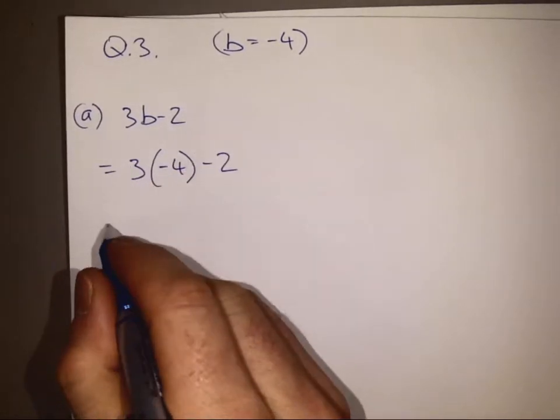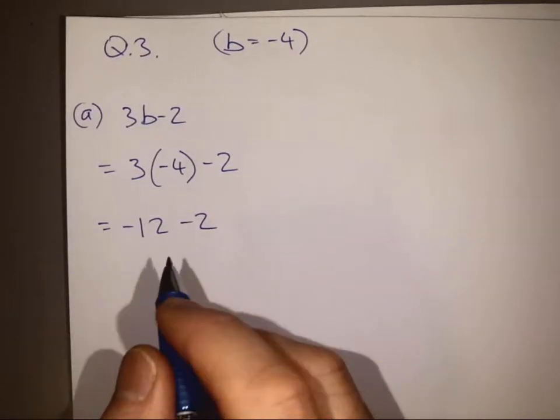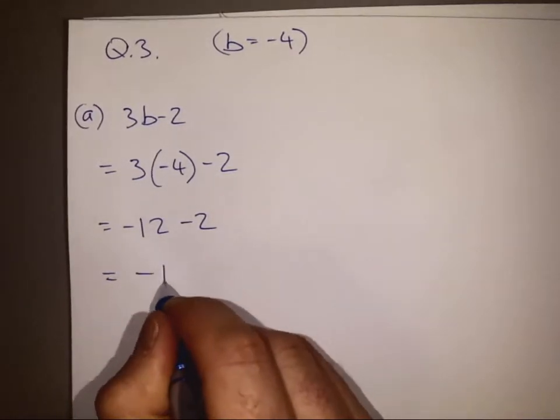3 times minus 4 is minus 12, minus another 2 there, that gives us minus 14.